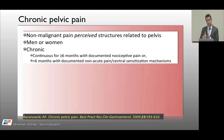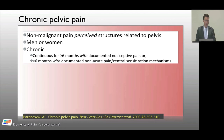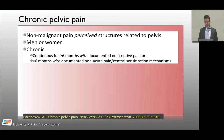Strictly speaking, chronicity means pain lasting more than six months for nociceptive pain, or if you want to diagnose chronic pain before six months, you need to document central sensitization. That's a good definition from a thorough article by Andrew Baranowski in the UK. There's a lot of nomenclature around the taxonomy of chronic pelvic pain, and it's important to get definitions right.